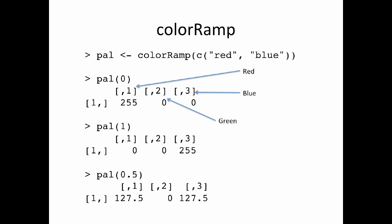When I call pal(1), I get 0 for red, 0 for green, and the maximum 255 for blue — so that's the color blue, the other end of the palette. If I do pal(0.5), I get 127.5 for red, 0 for green, and 127.5 for blue — half red, half blue. Notice there's no green in any of these calls, because when you interpolate between red and blue you don't encounter green along the way.